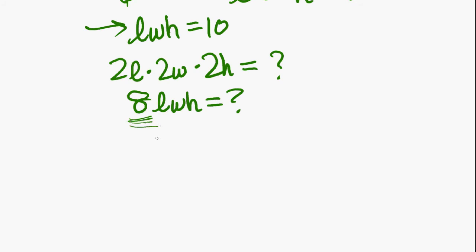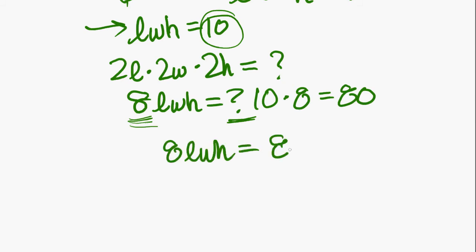Now if on the left you're going to multiply it by 8, then on the right you're going to want to multiply it by 8 as well. So right now on the right it's 10, if you multiply that by 8, you get 80. So 8LWH equals 80. And 80 is answer D.